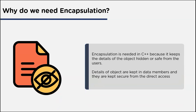Why do we need encapsulation? Hiding the details or attributes of an object is important. Encapsulation helps keep those details hidden and safe from users by securing them from outside access. There are many implementation details that users are not supposed to see, so these details are kept secure from direct access to class members from outside the class.